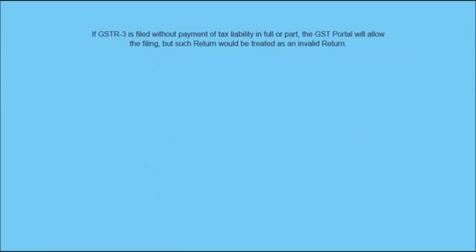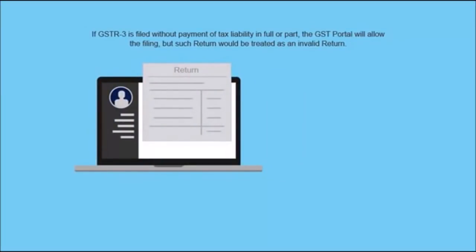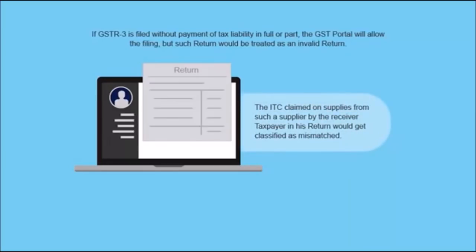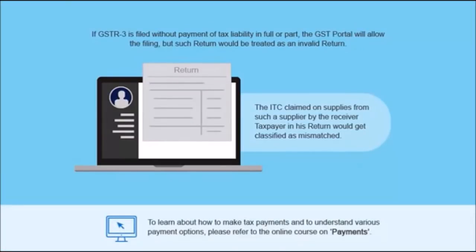If GSTR 3 is filed without payment of tax liability in full or part, the GST portal will allow the filing but such return would be treated as an invalid return. Consequently, the ITC claimed on supplies from such a supplier by the receiver taxpayer in its return would get classified as mismatched. To learn about how to make tax payments and to understand various payment options, please refer to the online course on payments.